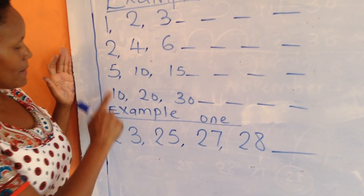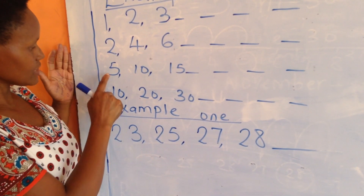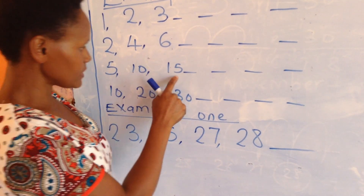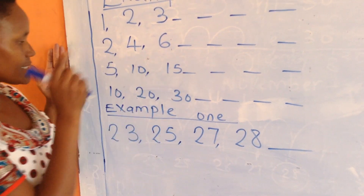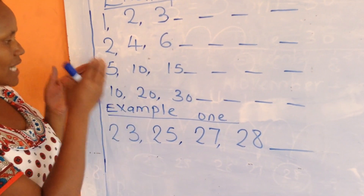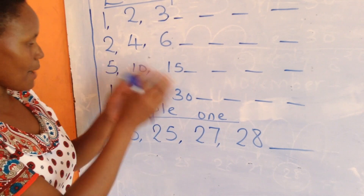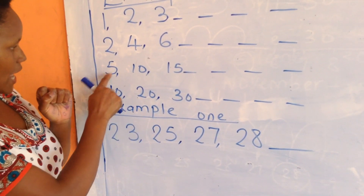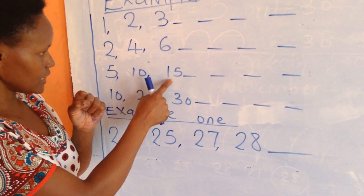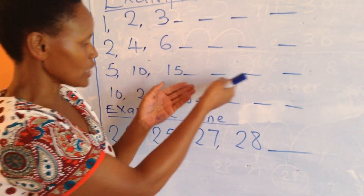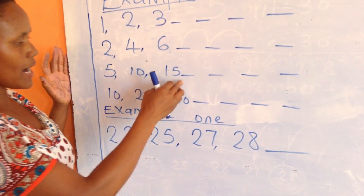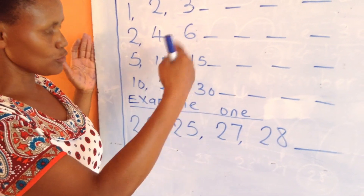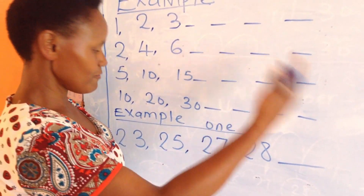My number 3 example — I've written 5, 10, 15. Still this is a number pattern, but I've skipped my numbers in 5s: 5, 10, 15. You can still continue with the number pattern — it can be 20, 25. You skip in 5s.